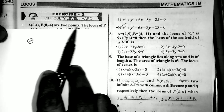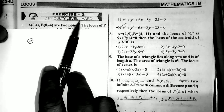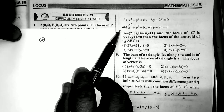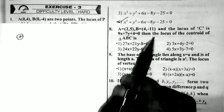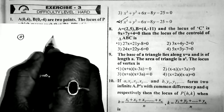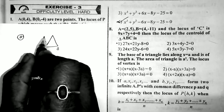This is the last video of the local chapter — a continuation of exercise 3. In the last video I explained up to the seventh problem. Now this is the eighth question. The given data: A is equal to (2, 5), B is equal to (4, -11), and the locus of C is 9x + 7y + 4 = 0. We need to find the locus of the centroid of triangle ABC.